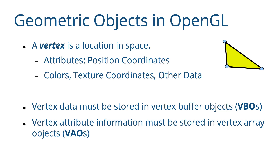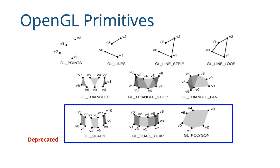In modern OpenGL, which is OpenGL 3.3 and above, both VAOs and VBOs must be specified so that the GPU gets access to our geometry data.